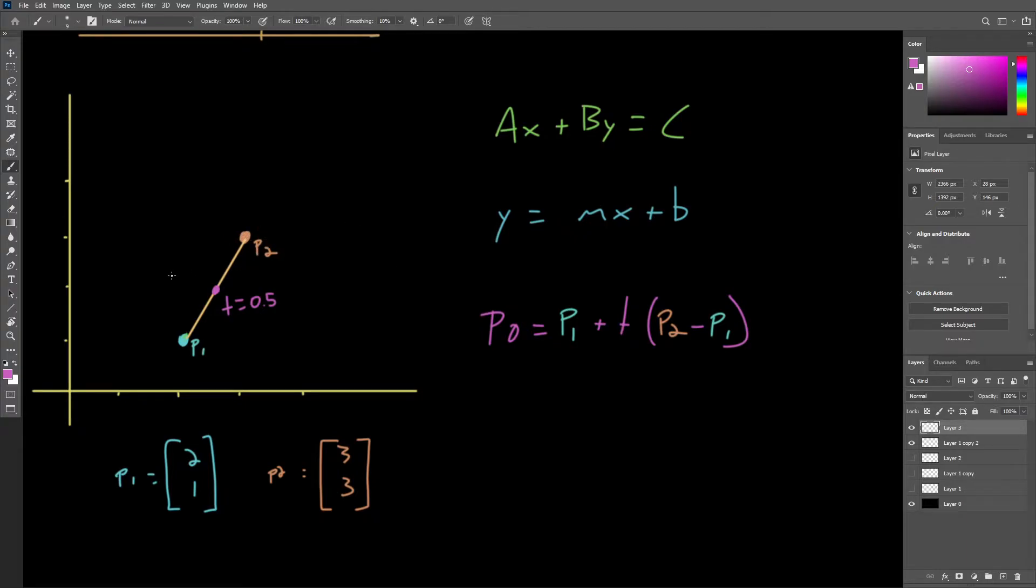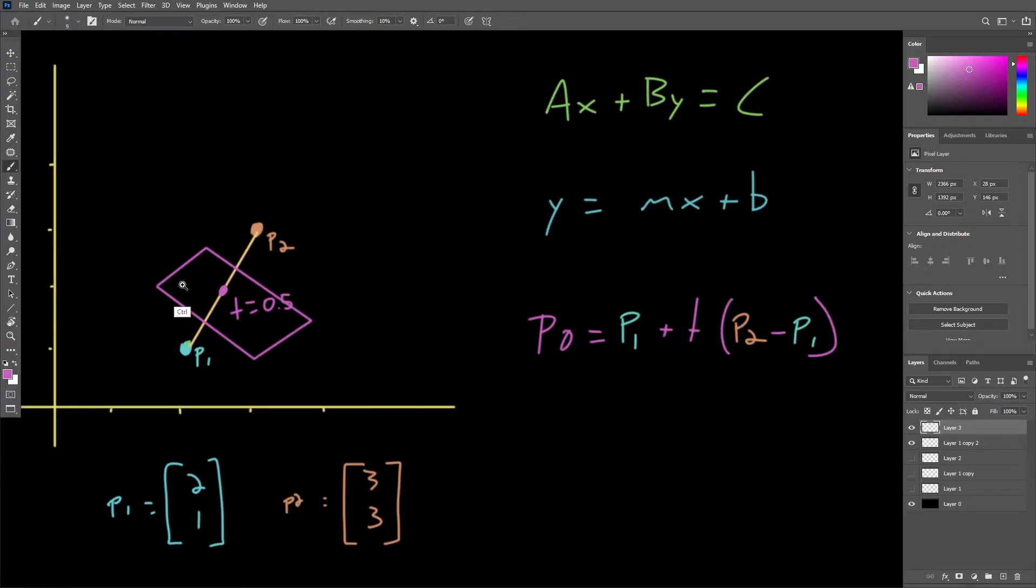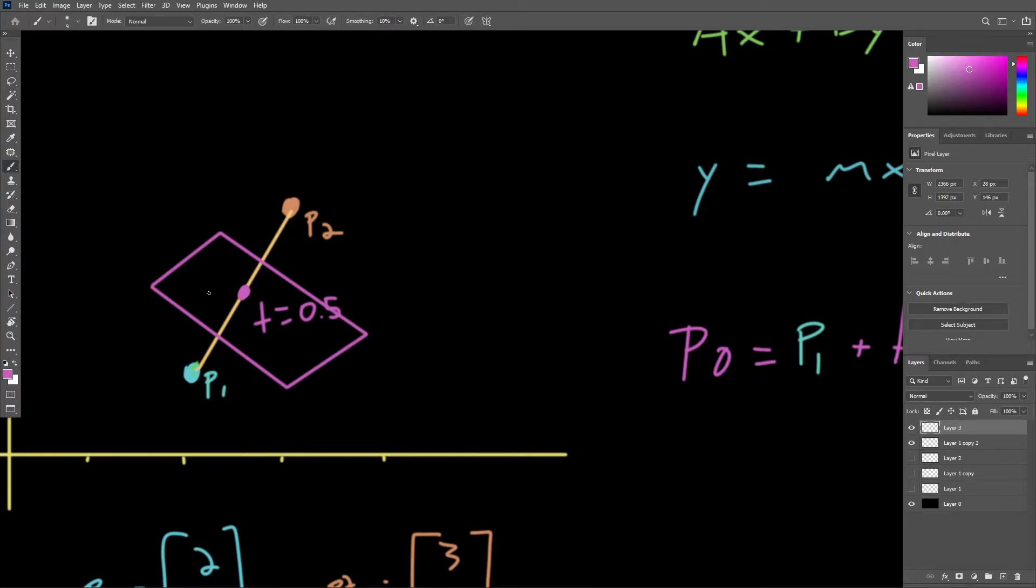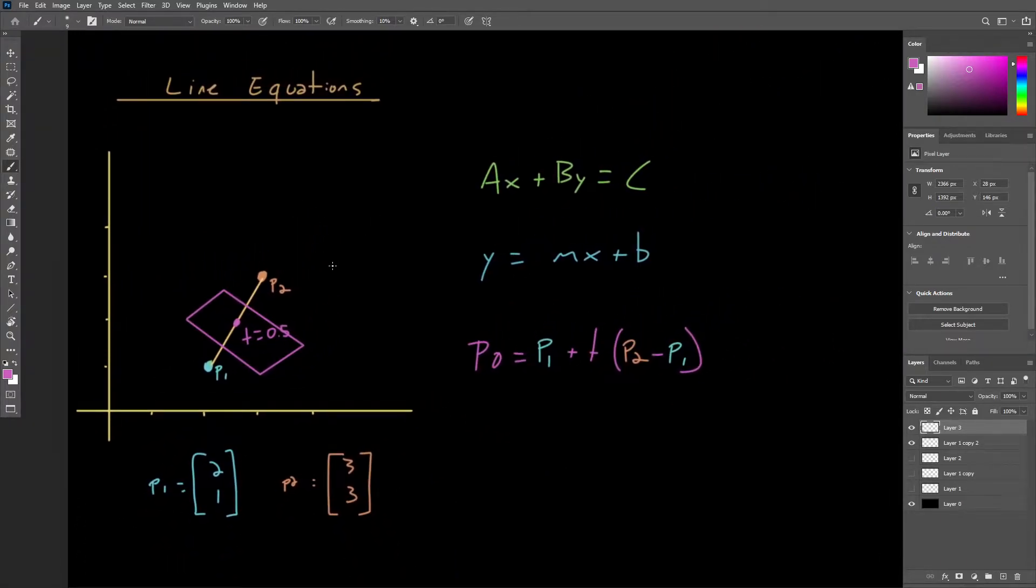P0 would end up being the point exactly in the middle of the line segment defined by P1 and P2. This will become very useful when we have to find line-plane intersections, as basically what we're trying to do is figure out how far along this line segment does this point of intersection actually lie. So we will use this idea moving forward.